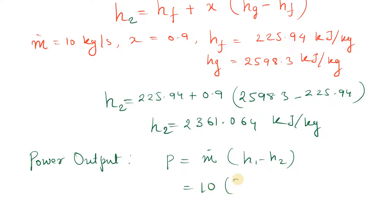Mass flow rate is 10, so it's 10 times (3251 minus 2361.064). Power output will be 8899.4 kilowatts, or approximately we can say 8.9 megawatts.